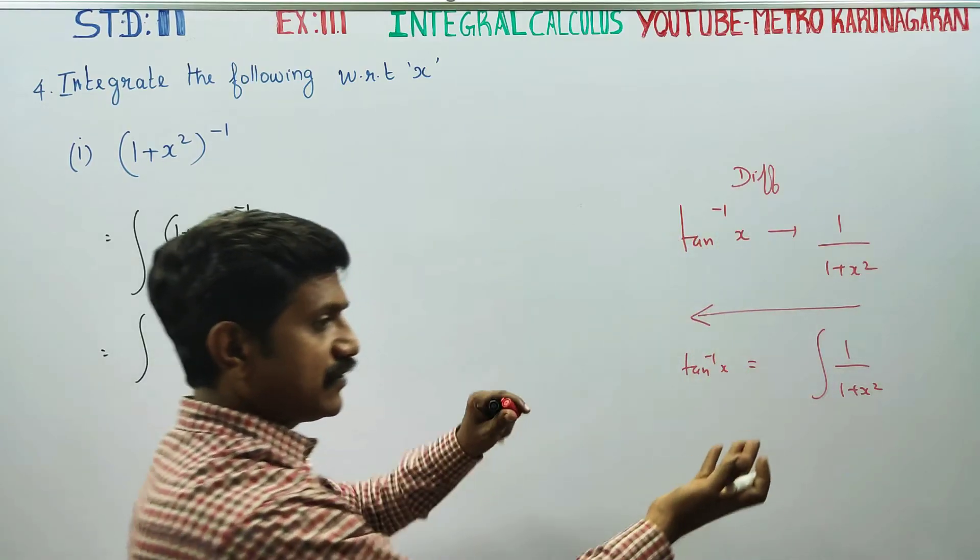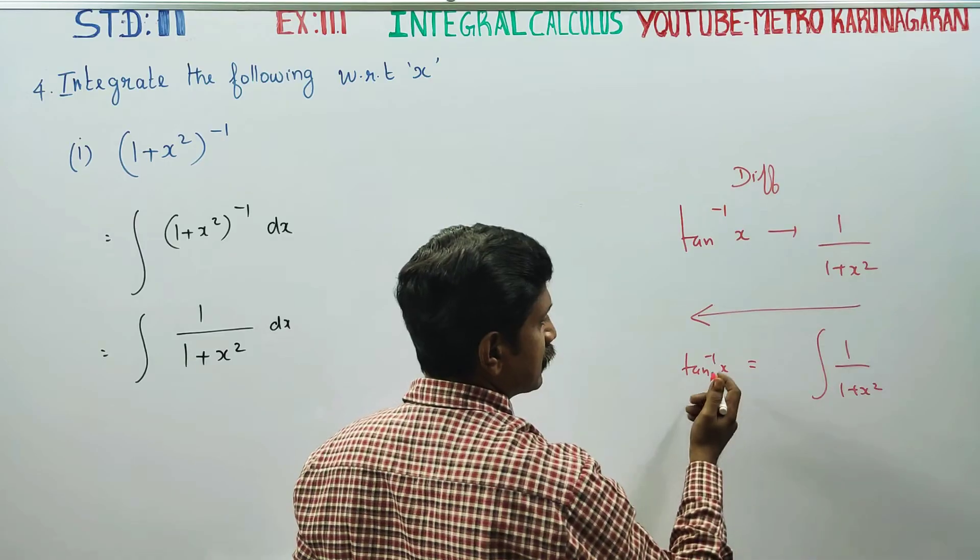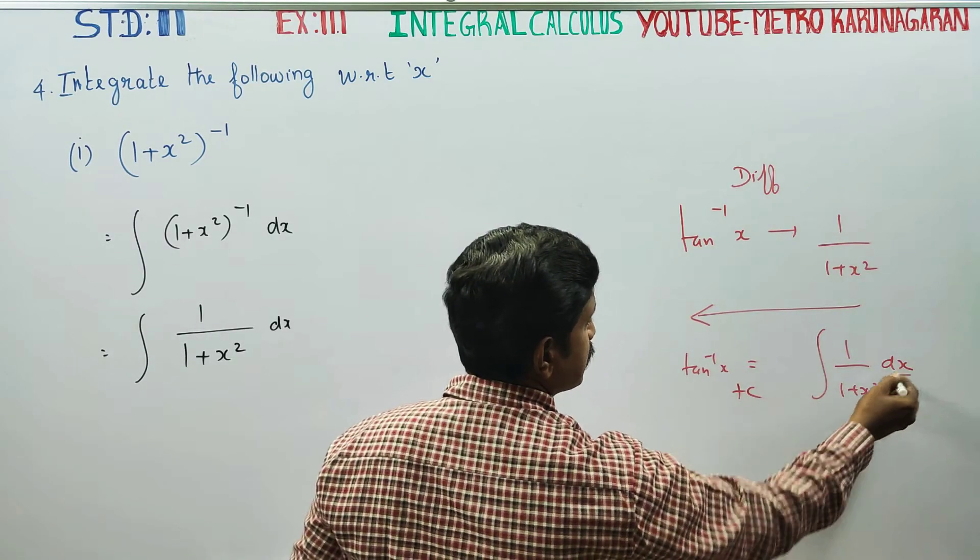Differentiation and integration are reverse processes. The answer is written as 1/(1+x²).